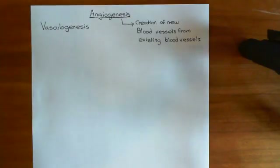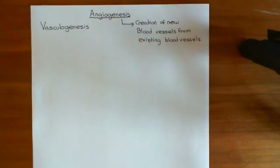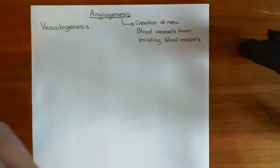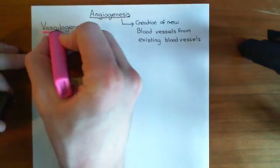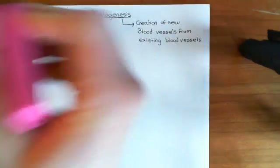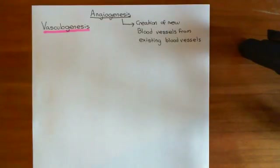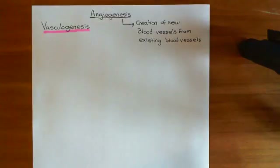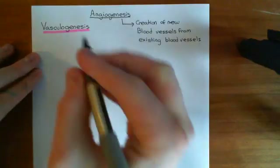Vasculogenesis is something that occurs in embryology - when you are an embryo in utero, you are creating blood vessels. Blood vessels in the embryo are mesodermal in origin. Remember, there are three layers in the trilaminar germ disc: the ectoderm, the mesoderm, and the endoderm. Blood vessels are of mesodermal origin.